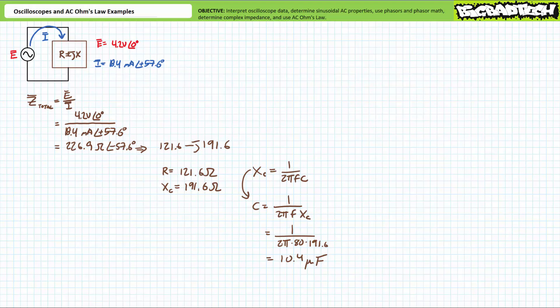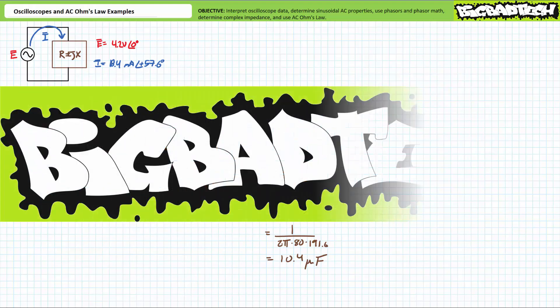All right, that's enough for today. I must remind you that these techniques represent a mandatory minimum level of competency that you will be expected to reliably demonstrate on a regular basis. You simply must be able to interpret sinusoidal properties from an oscilloscope display, place sinusoidal properties in phasor format, and use AC Ohm's Law. If you need to revisit or review any of these topics, that option is available and encouraged. In conclusion, this lecture looked at illustrated examples reviewing O-scope data interpretation, sinusoidal properties, phasors and phasor math, complex impedance calculations, and AC Ohm's Law. Remember to review these concepts as often as you need. Thank you very much for your attention and interest — we'll see you again during the next lecture.